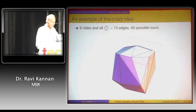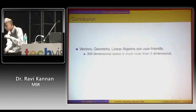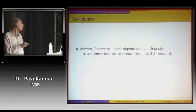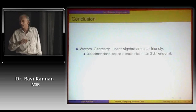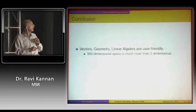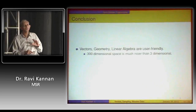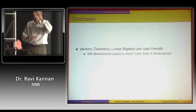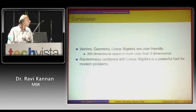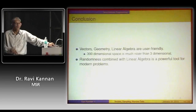To conclude: I hope I've convinced you, if not thoroughly, then at least briefly, that vectors, geometry, and linear algebra are very user-friendly. These high-dimensional vectors are actually quite a bit nicer than three- and four-dimensional vectors. In low dimensions, vectors don't behave like random things and you must understand precisely what they are. But in high-dimensional space, statistics is very useful. Randomness combined with linear algebra is a very powerful tool for modern problems.